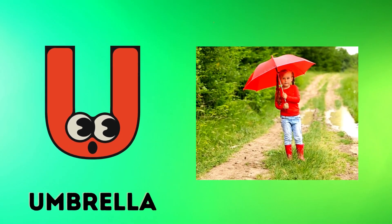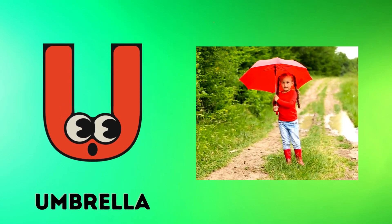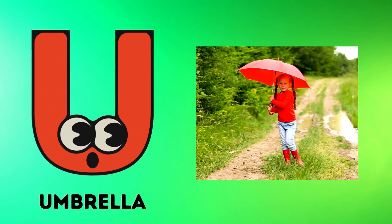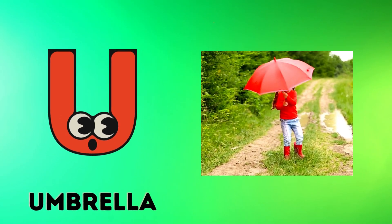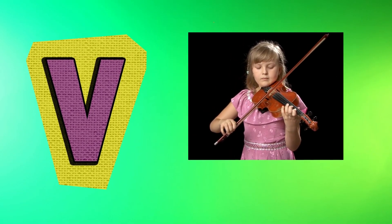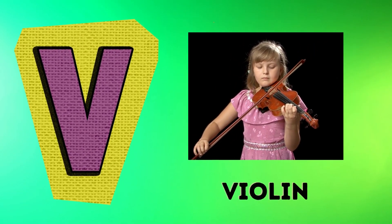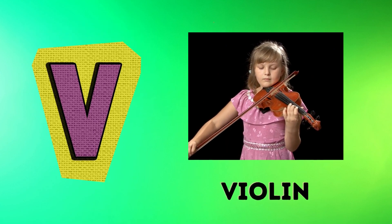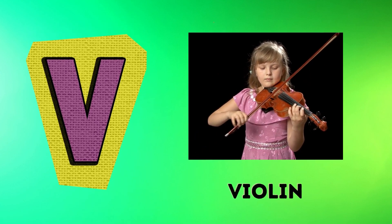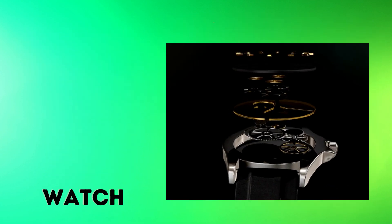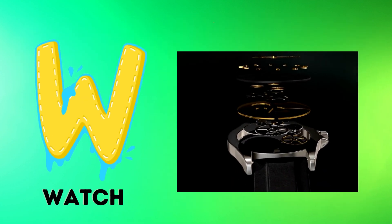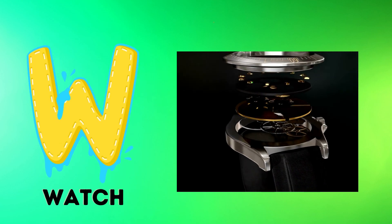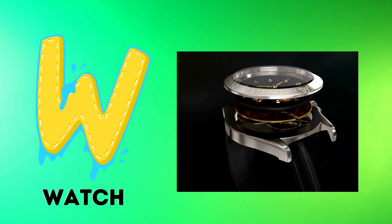U is for umbrella, u-u-umbrella. V is for violin, v-v-violin. W is for watch, w-w-watch.